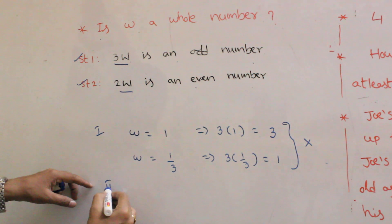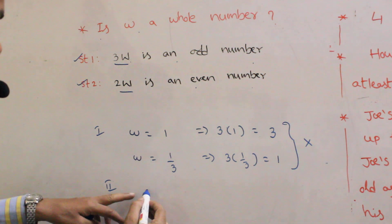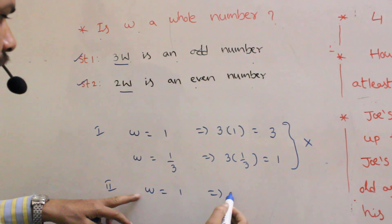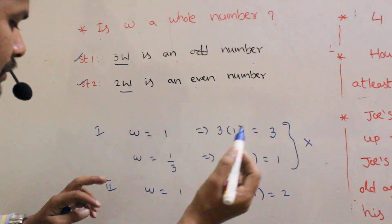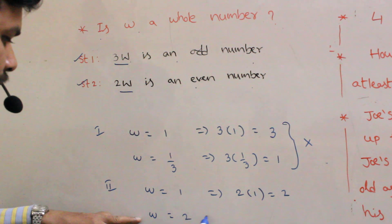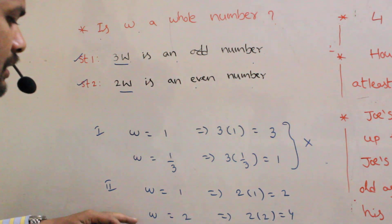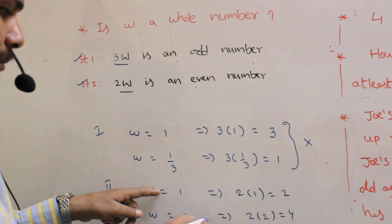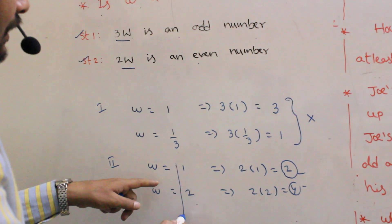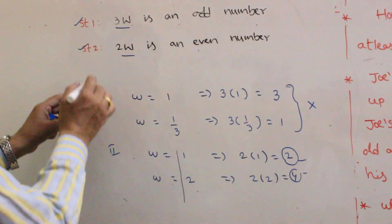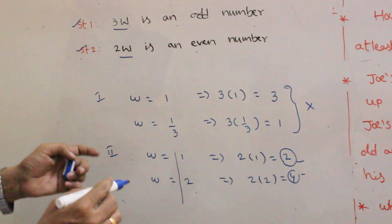Coming to the second statement: 2W is an even number. Suppose if you take W equal to 1, then 2W means 2 into 1, which equals an even number. Suppose W equals 2, then 2 into 2 is also an even number. If you take any whole number for W, the resultant value is always an even number. That's why only statement 2 alone is sufficient.